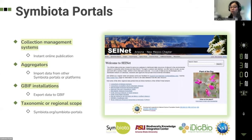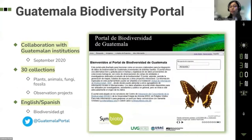Symbiota portals can have a taxonomic or regional scope depending on the community behind them. For example, the SEINet portal is focused mainly on the flora of North America. There are more than 45 Symbiota portals worldwide. Today we focus on the Guatemala Biodiversity Portal, created in September 2020 by the team at Arizona State University in collaboration with Guatemalan institutions. So far, 30 collections and 6 observation projects are being directly managed, including plant, animal, fungi, and fossil collections. The portal is available in English and Spanish.